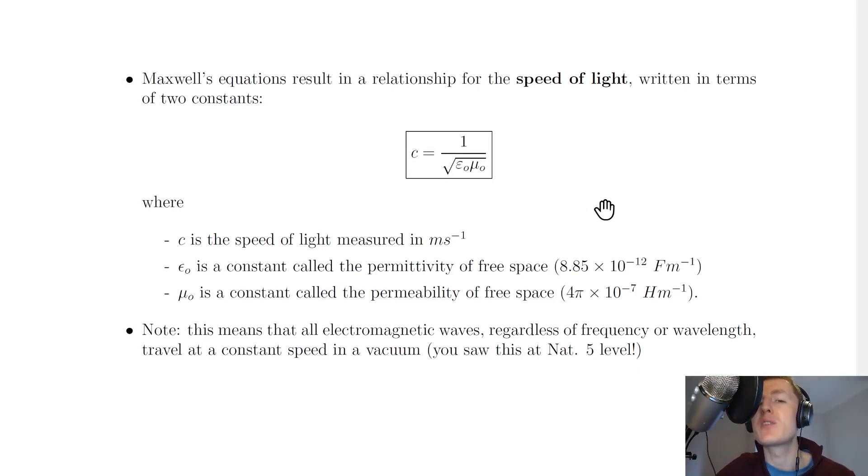From special relativity at higher level, Einstein's postulate said that the speed of light in a vacuum is the same for all observers: 3 times 10 to the 8 meters per second. Nothing can travel faster than the speed of light.